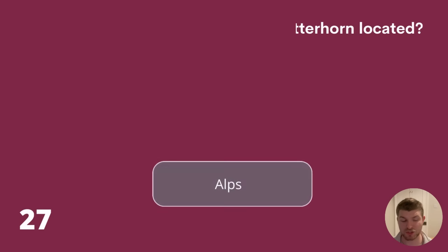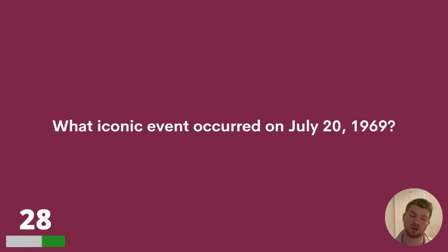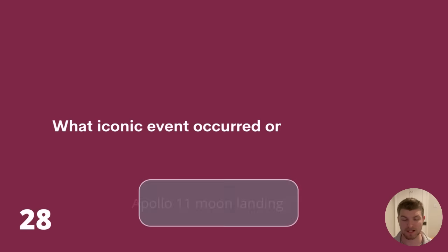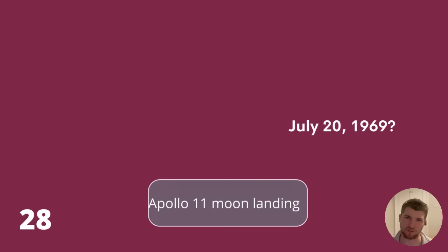Question 28. What iconic event occurred on July 20th, 1969? There are no multiple choice options on this question. The answer is Apollo 11 Moon Landing. Well done if you got that one right.